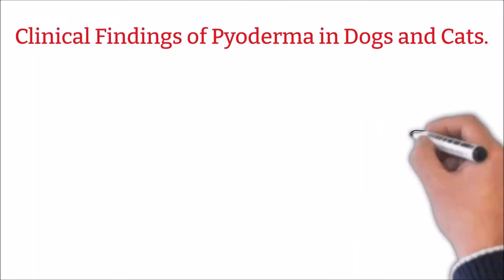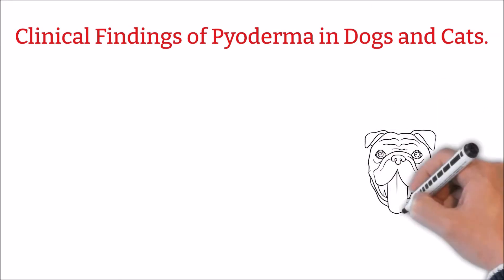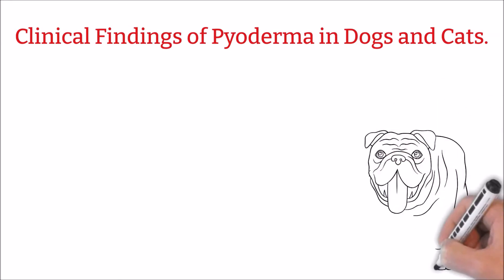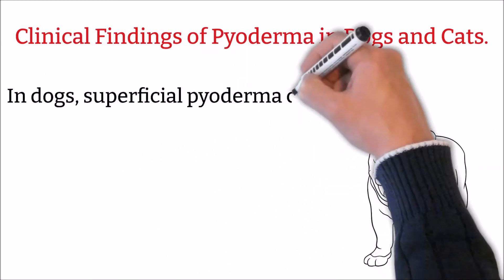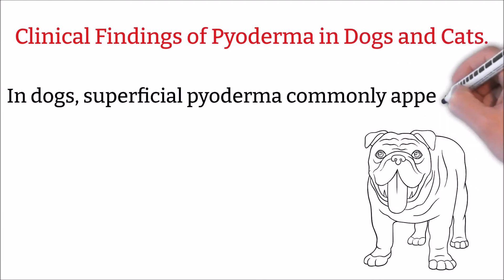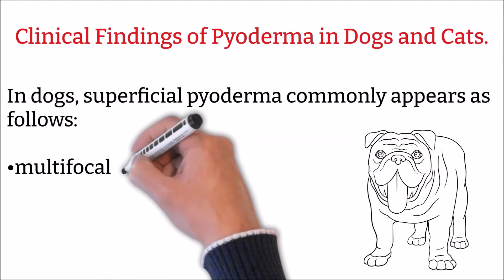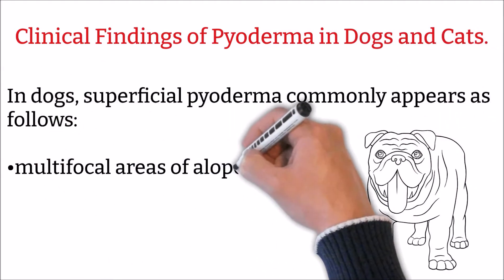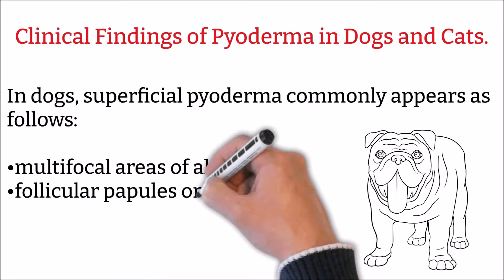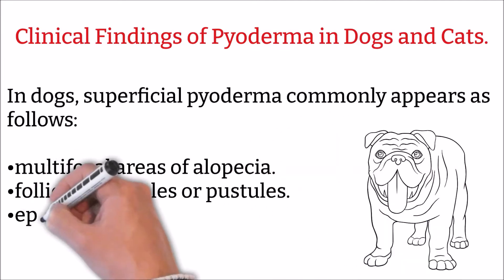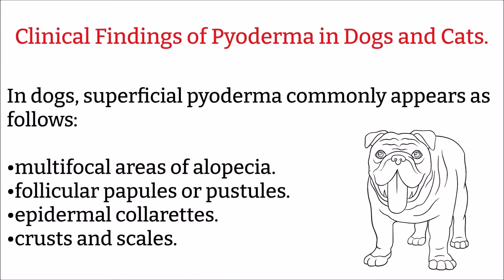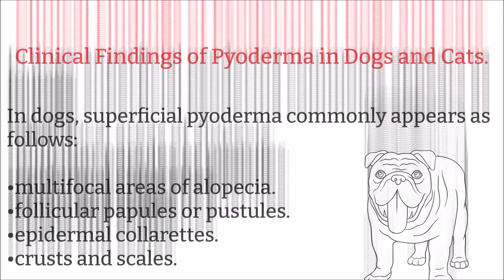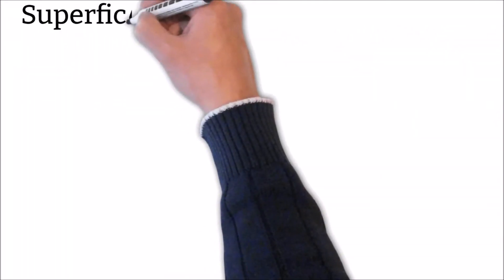Clinical findings and lesions of pyoderma in dogs and cats. In dogs, superficial pyoderma commonly appears as multifocal areas of alopecia, follicular papules or pustules, epidermal collarettes, and crusts and scales. The hallmarks of deep pyoderma in dogs are pain, crusting, odor, and exudation of blood and pus.